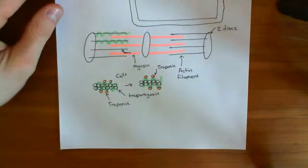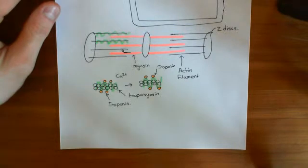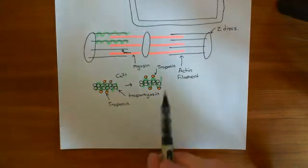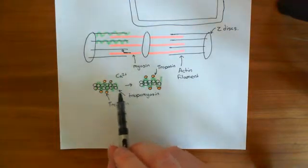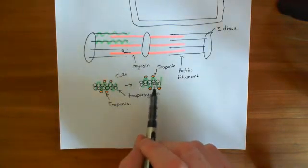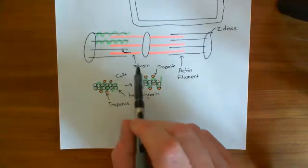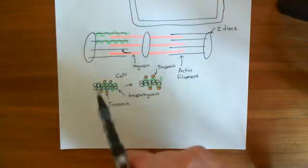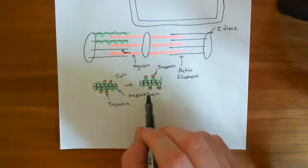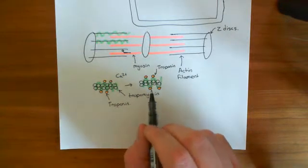Welcome to this next video on skeletal muscle contraction. So far we've seen that when a skeletal muscle is stimulated to contract, it leads to calcium release from the sarcoplasmic reticulum, and the calcium binds to troponin, changes the conformation of troponin, troponin moves tropomyosin, and basically tropomyosin no longer blocks the myosin head binding sites on the actin monomers. So now the myosin heads of the myosin filaments can interact with the myosin binding sites on the actin monomers, and what you can begin to get is a process known as cross-bridge cycling.